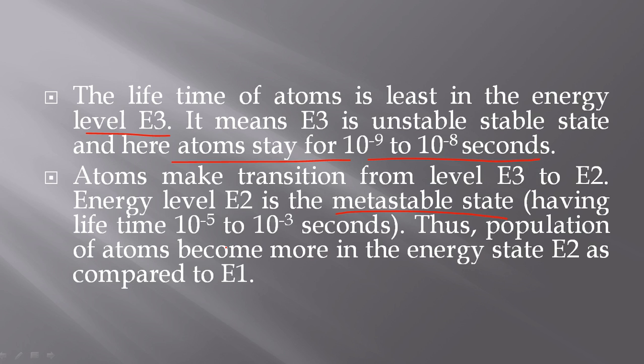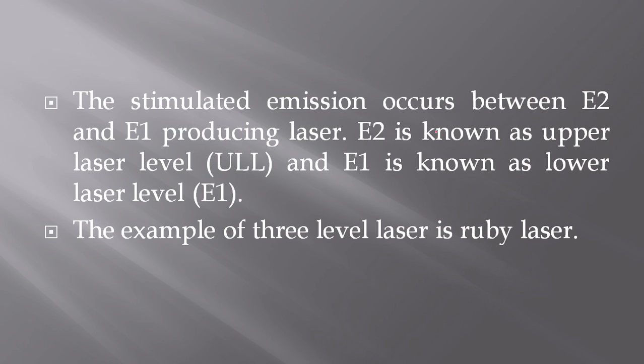Thus, population of atoms become more in the energy state E2 as compared to E1. I have already discussed the metastable state in my previous video lectures. The stimulated emission occurs between E2 and E1 producing lasers. E2 is known as upper laser level and E1 is known as lower laser level. The example of 3 level laser is ruby laser.